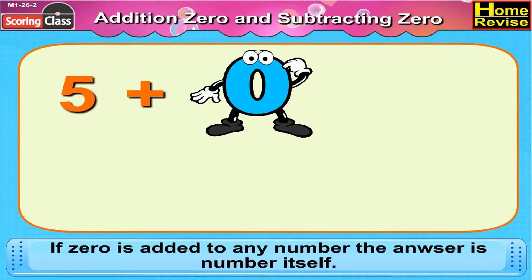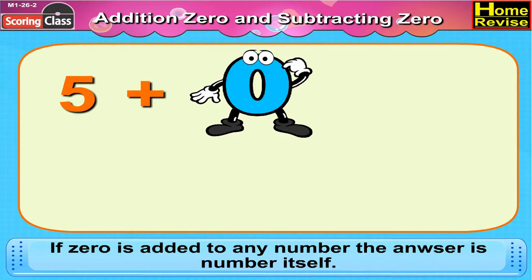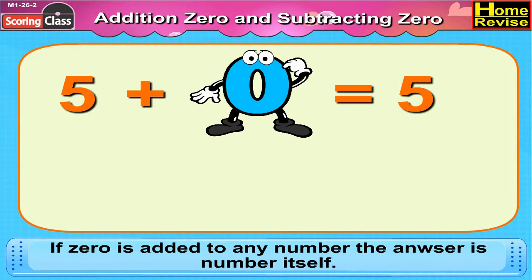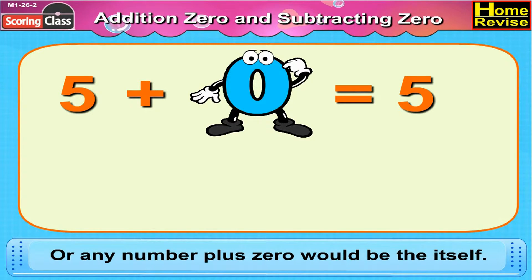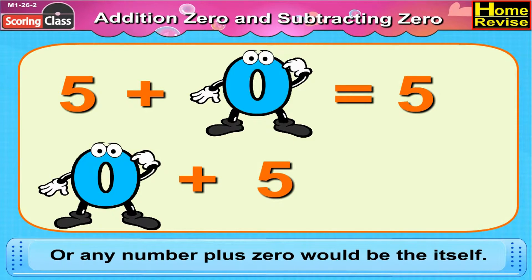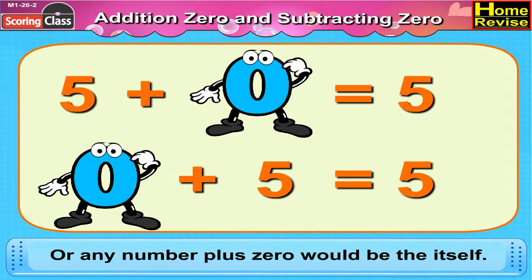Kids, I'm sure you've understood one thing. If zero is added to any number, the answer is the number itself. Any number plus zero would be the number itself.